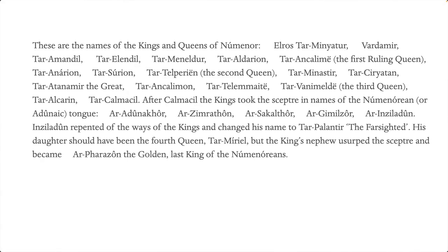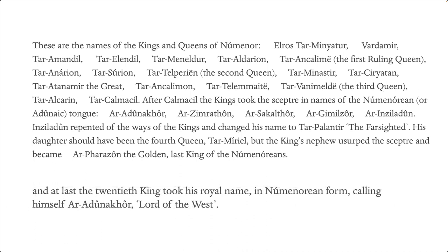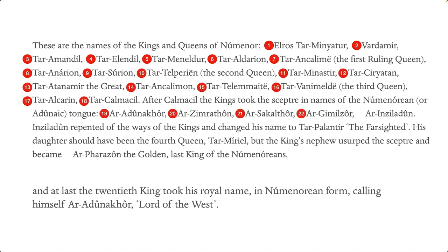If you take an older edition of Lord of the Rings, like this 1966 second edition, and look at Appendix A, you'll see that it has a kings list that looks something like the following. It lists various names of kings and queens in Numenor in order, and then a couple of paragraphs later it says, 'And at last the 20th king took his royal name in Numenorean form, calling himself Ar-Adunakhor, Lord of the West.' The problem is, if you actually count the names in the earlier list, you'll find that Adunakhor is actually 19th.